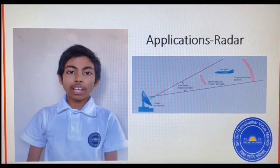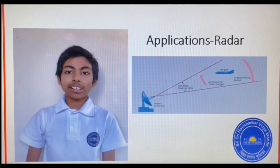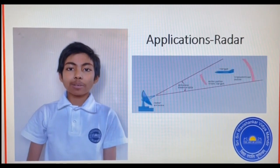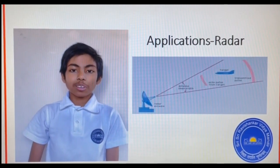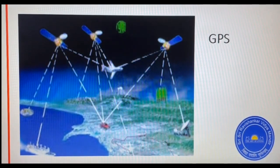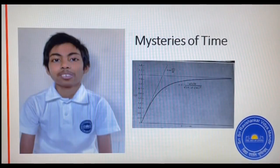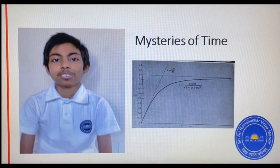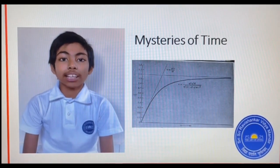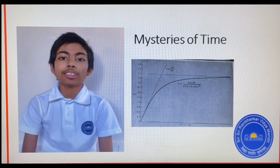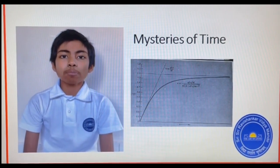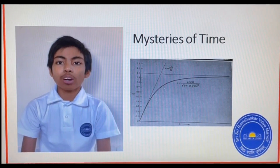In weather balloons, time signals are used to measure the flow of air at the upper atmosphere. One mystery of time is that it has a unidirectional arrow which only increases — we grow up but cannot go back to our childhood.